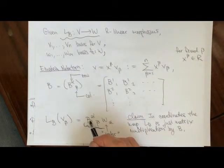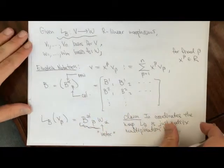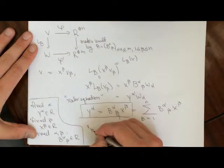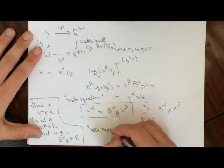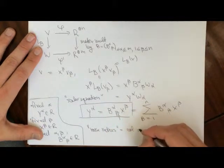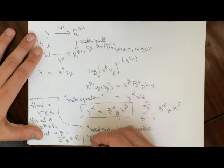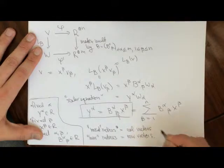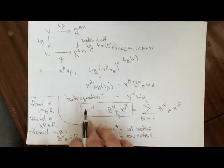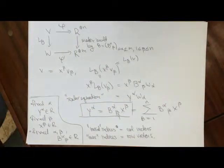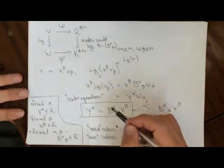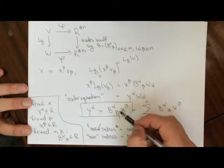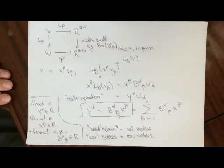You could think of this as multiplication by a row vector. The idea is that raised indices are column vectors and lowered indices are row vectors. So when you have a really long expression in linear algebra or in tensors, you'll be able to tease out the matrix multiplication just by looking at which indices are adjacent to each other. This is really convenient.